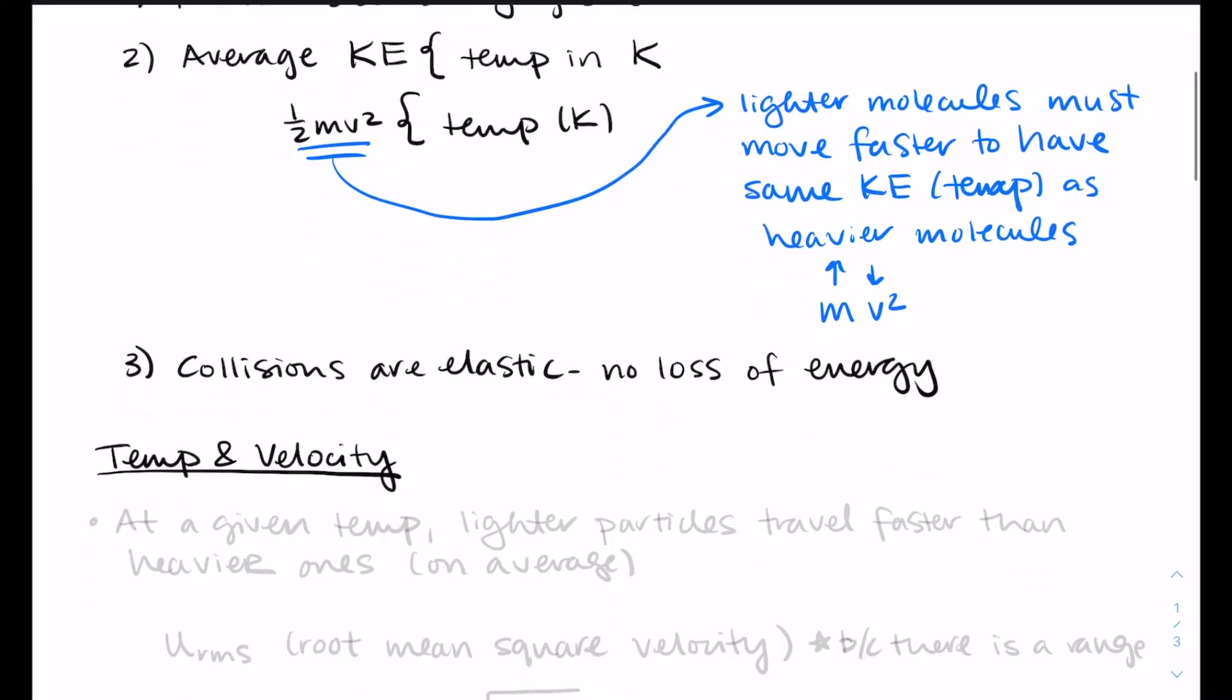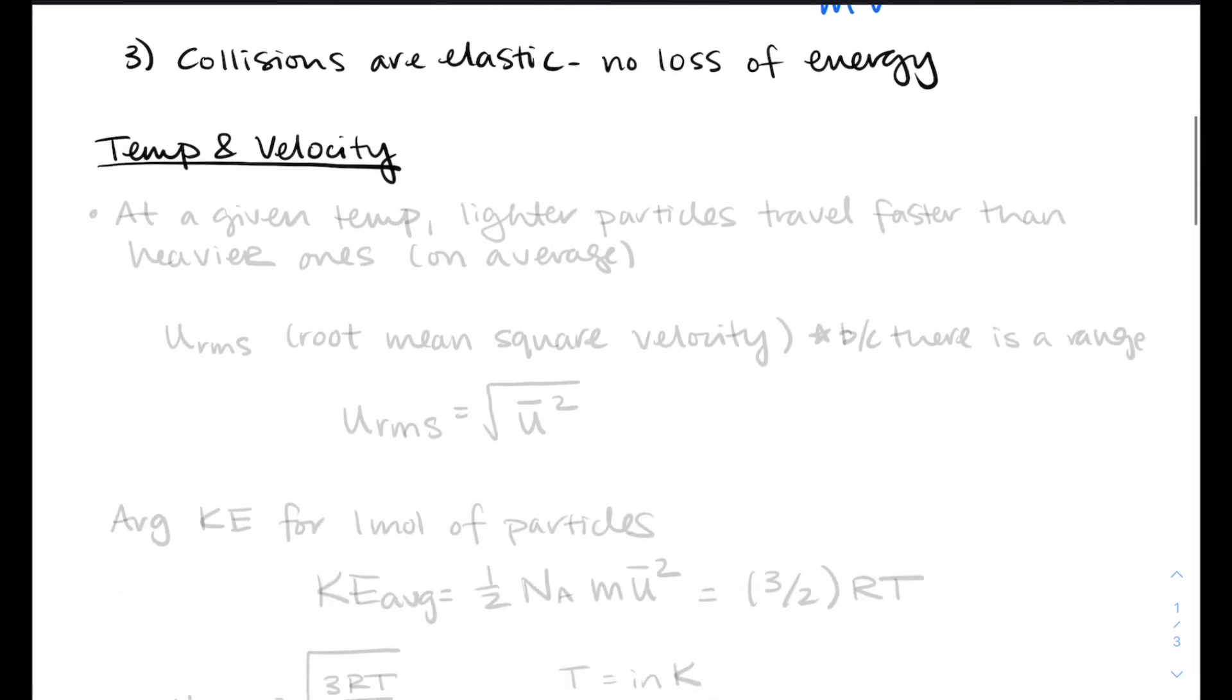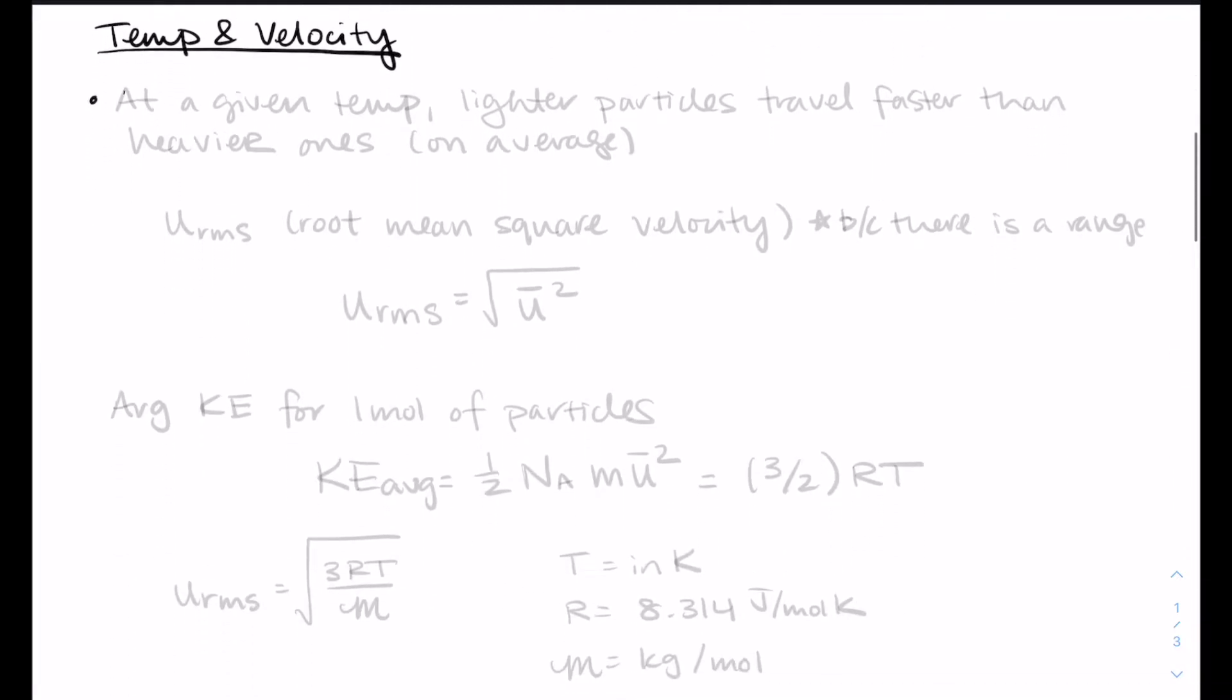So temperature and velocity. At a given temperature, lighter particles travel faster than heavier ones. This is on average. This is based on our second assumption in kinetic molecular theory. We use the root mean square velocity to be the velocity of the gas particle.